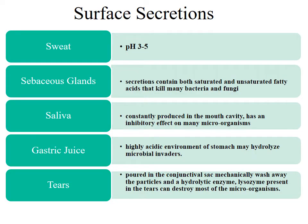The second component of innate immunity includes surface secretions. Saliva in the oral cavity has an inhibitory effect on many microorganisms; it contains lysozyme, lactoferrin, histatin, and proline-rich proteins, all of which are bactericidal. Gastric juice is highly acidic and can hydrolyze microbial invaders. Tears not only wash away particles but also possess hydrolytic enzymes that can destroy most microorganisms.